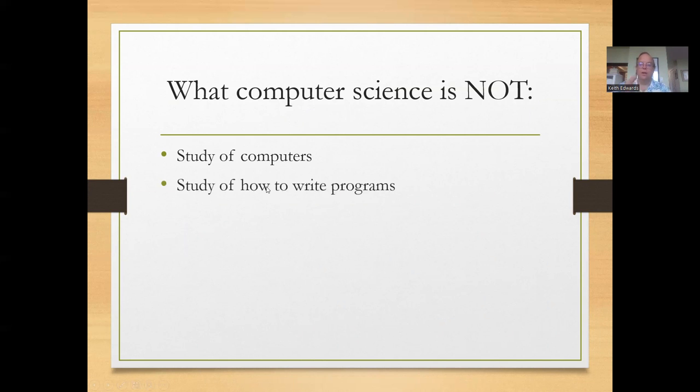It's not necessarily the study of how to write programs. Writing programs is tremendously important, and we do a lot of that in computer science. But it's more than just the writing of the programs. Is the program that you've written efficient for the task? Is it correct? How good are the results that you get from that program? These are related questions that don't necessarily have to do with the writing of the program itself.